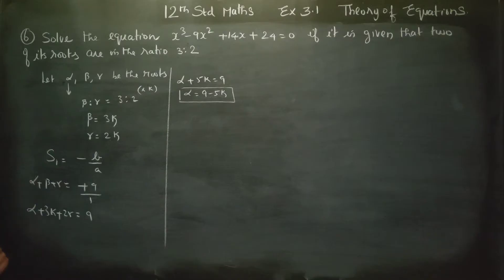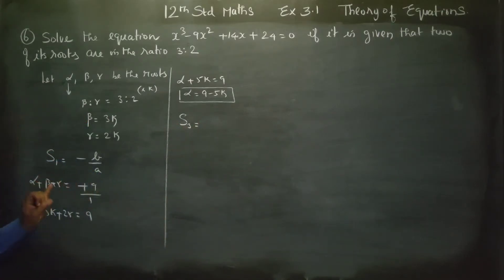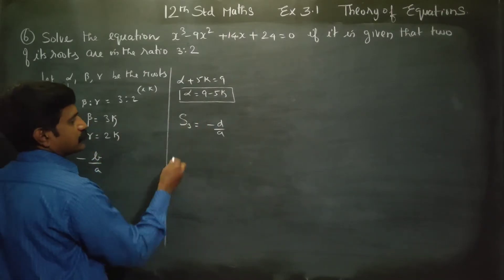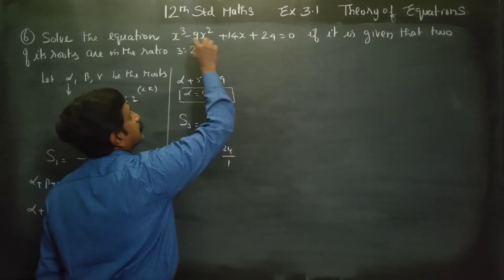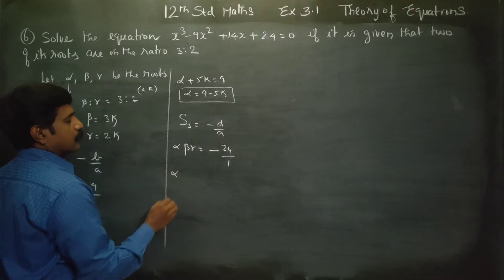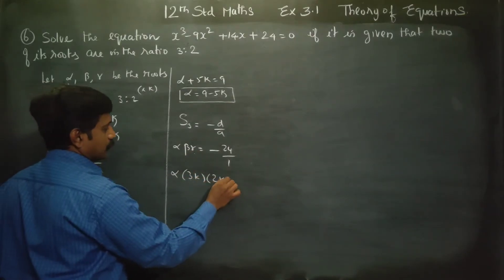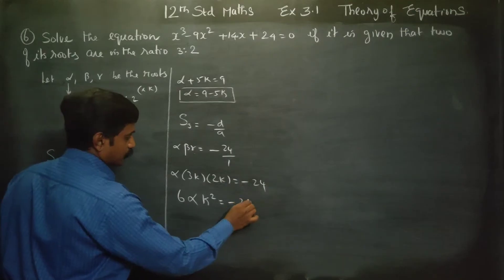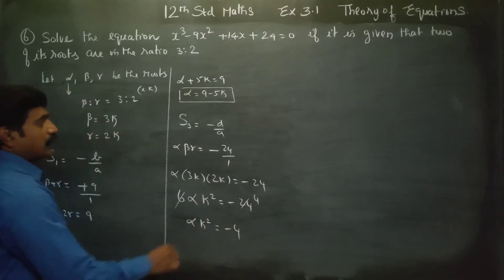Next, moving to the product of the roots, S3. S3 is the formula for three roots taken at a time: alpha times beta times gamma equals minus D by A, which is minus 24 divided by 1, equals minus 24. Substituting beta equals 3k and gamma equals 2k: alpha times 3k times 2k equals minus 24, so 6 alpha k square equals minus 24, therefore alpha times k square equals minus 4.